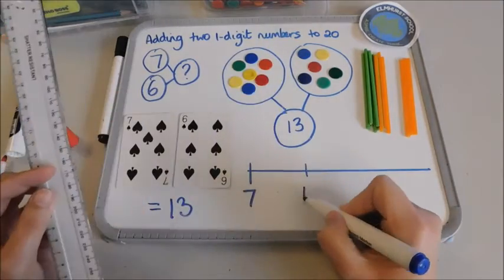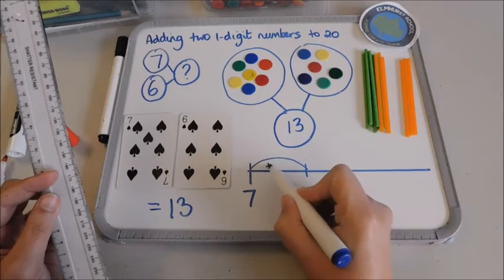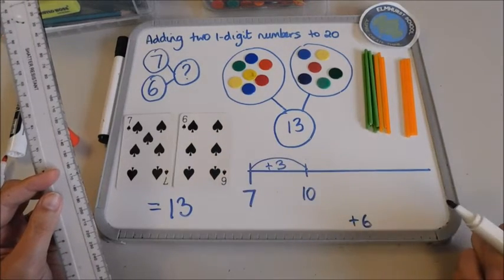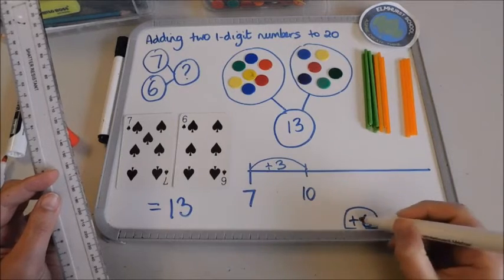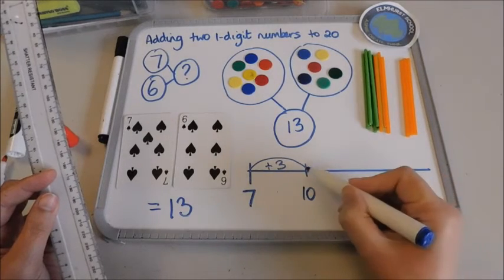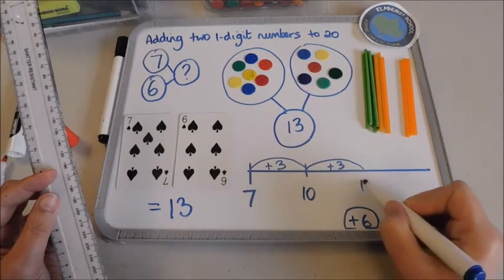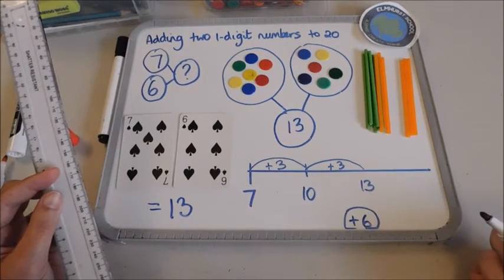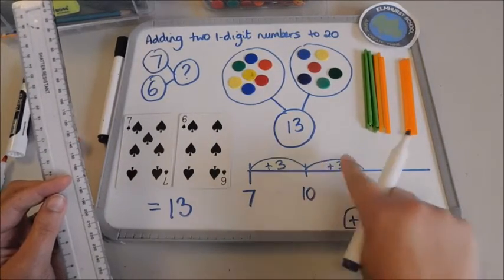So we're going to jump up to that ten first of all, and I know that I would actually add three. So if I've got this six here, I've already added on three. What's left? Well, that's going to be another three, and that would take me to thirteen.